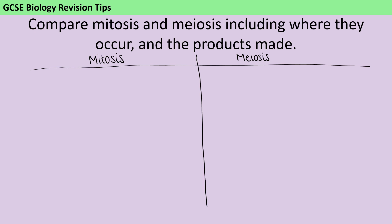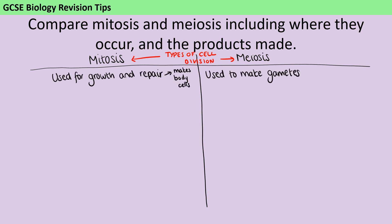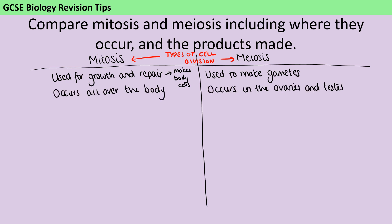Before thinking about differences, I'd note that these are two different types of cell division. Mitosis is used for growth and repair, and to make more body cells or somatic cells, whereas meiosis is used to make gametes or sex cells. Mitosis occurs all over the body, whereas meiosis occurs in the ovaries and the testes — or you might just say the reproductive organs.